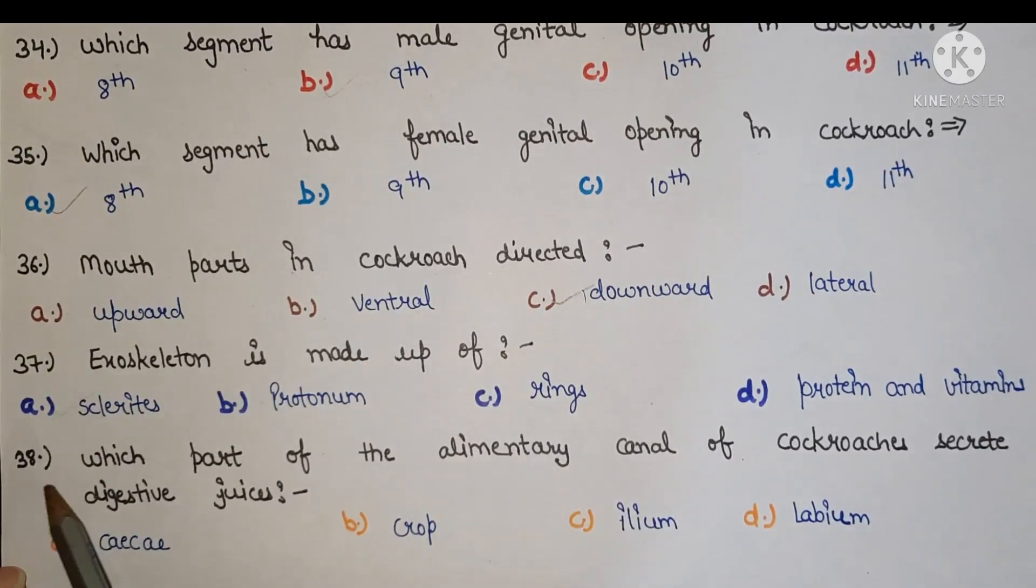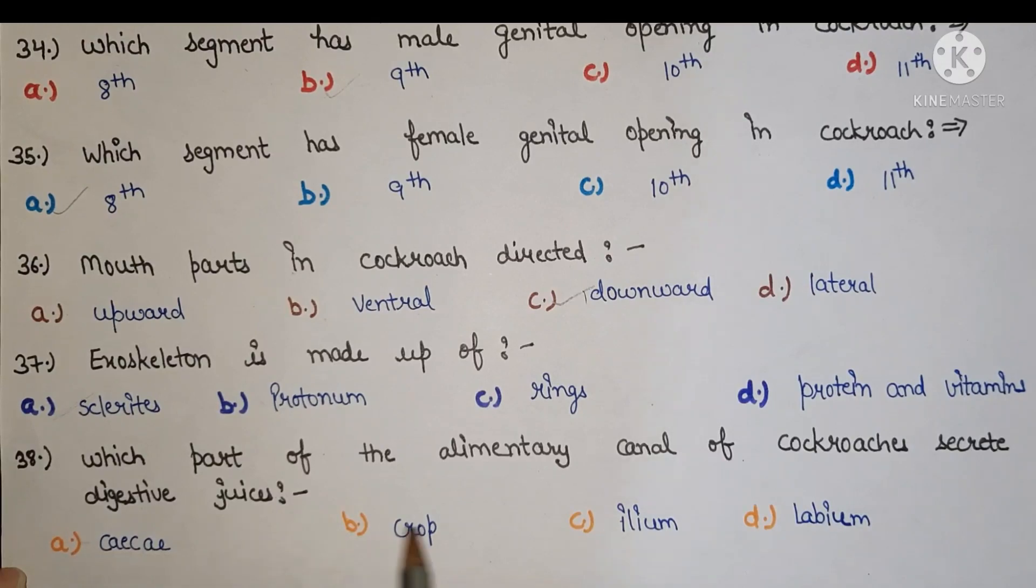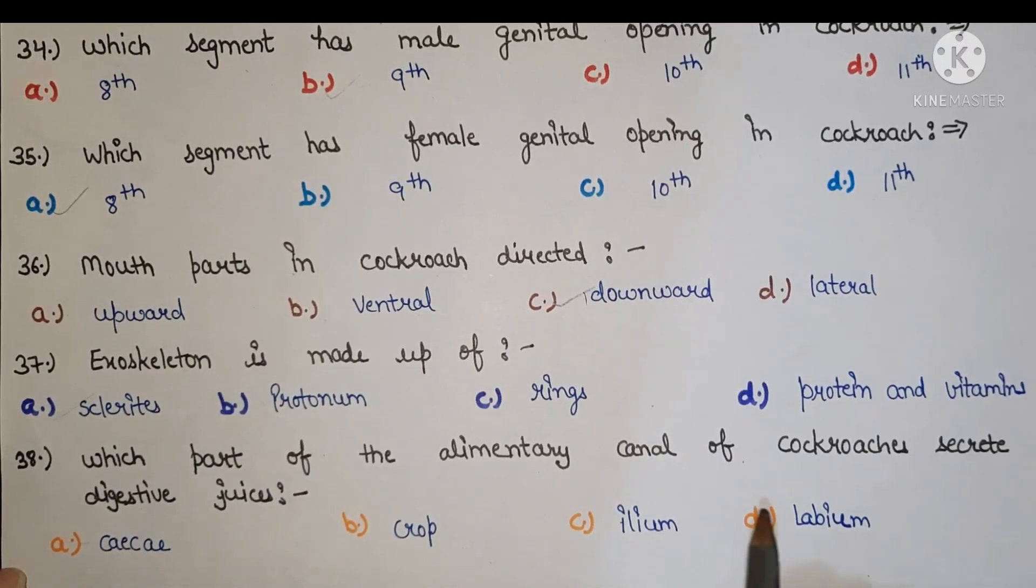Next, which part of the alimentary canal of cockroach secretes digestive juices? A caeca, B crop, C ileum, D labium. Right answer is A caeca.